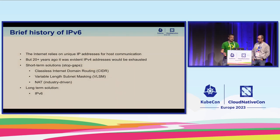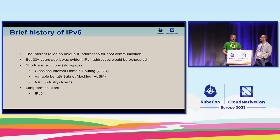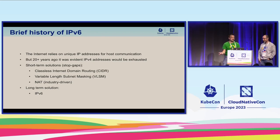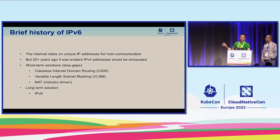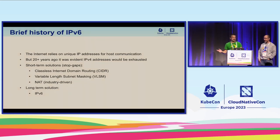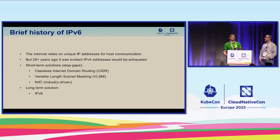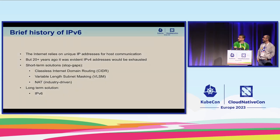Another technology used to extend IPv4's lifetime was NAT — something the IETF never liked but ironically one of the most successful technologies, used at home and everywhere. Those were the stopgaps, and they were very successful in extending IPv4's lifetime. The longer-term solution was to engineer a replacement protocol: IPv6. The main goal of IPv6 — despite many marketing claims — is simply to provide more addresses, period. Anyone making other claims will find they are not true.